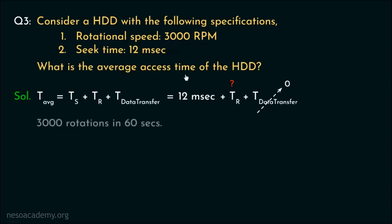So, 3000 RPM means 3000 rotations in 60 seconds. Therefore, one rotation will take 60 by 3000 seconds, which is 1 upon 50 seconds. I hope you remembered that we have to consider half of the rotation time, since we are considering average rotational delay.